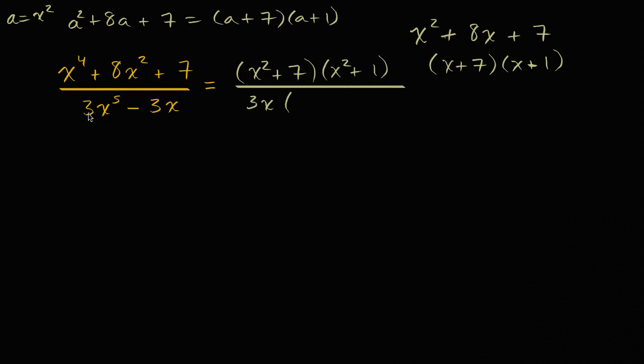So it's 3x times, if you factor out a 3x here, three divided by three is one, x to the fifth divided by x is x to the fourth, and then if you factor out a 3x here, you're just gonna get one.